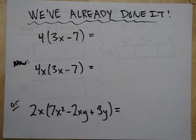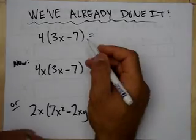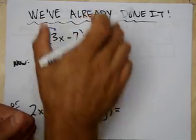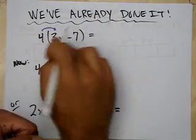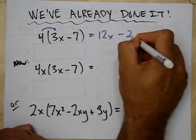Remember I told you this, a number is a monomial. We're doing it. So we've already done it. What do we do? We distribute it, right? So let's do it again. I have four, four of these things, right? So I have adding this to itself four times. I have four 3x's, which is 12x, and I have four negative sevens, negative 28, right?